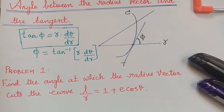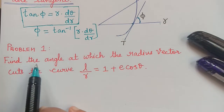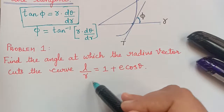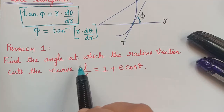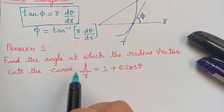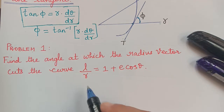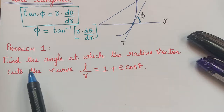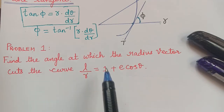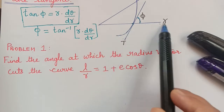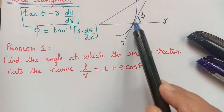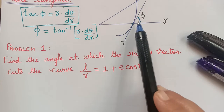Let us consider this problem. They are asking us to find the angle at which the radius vector cuts the curve. This is the conic that they have given, and for this curve we are going to find the angle between the radius vector and the tangent. The angle at which the radius vector cuts the curve is the same as the angle between the radius vector and the tangent at that point.